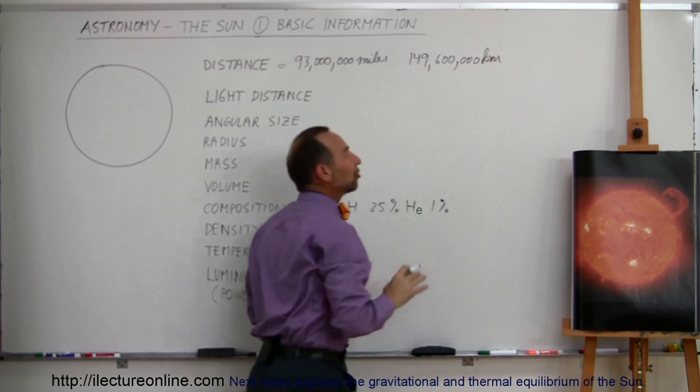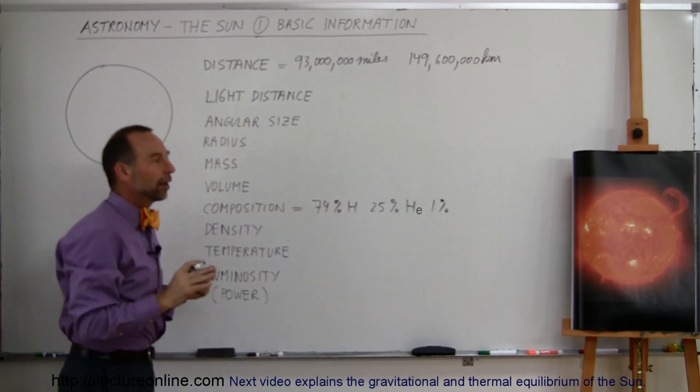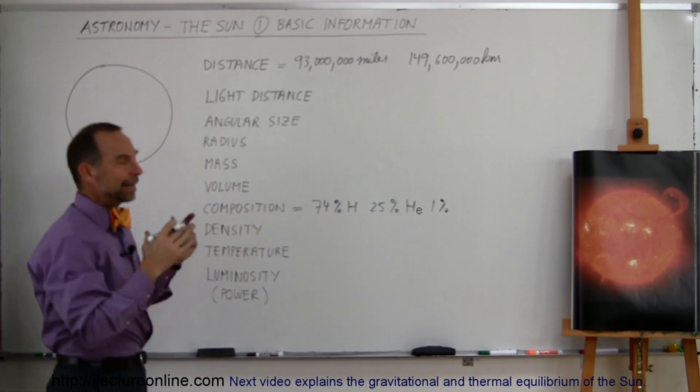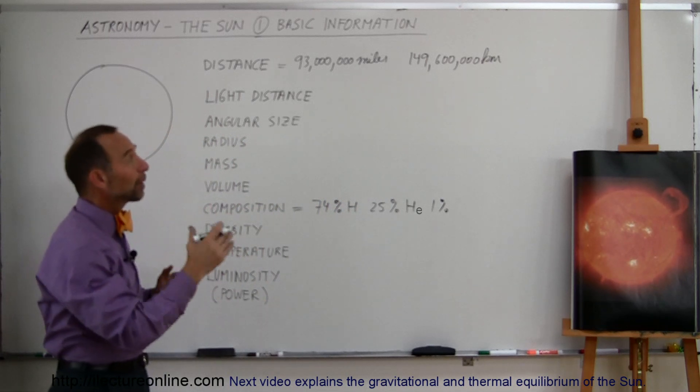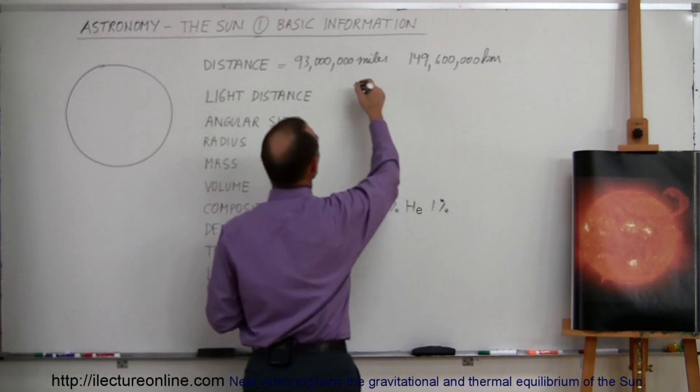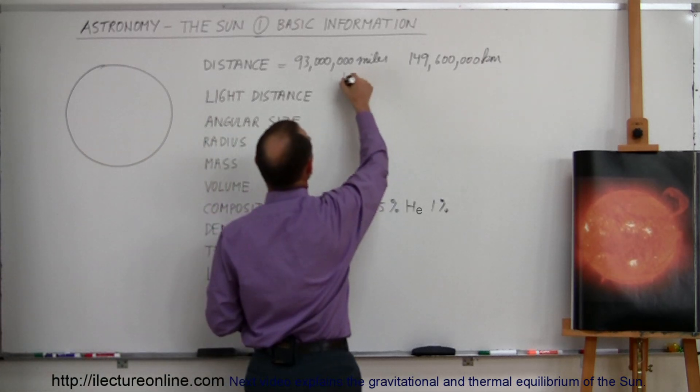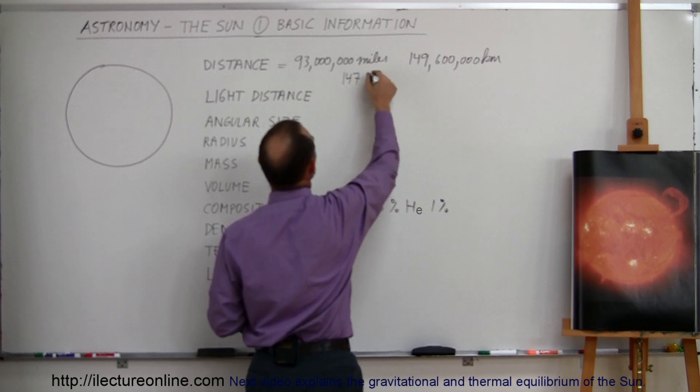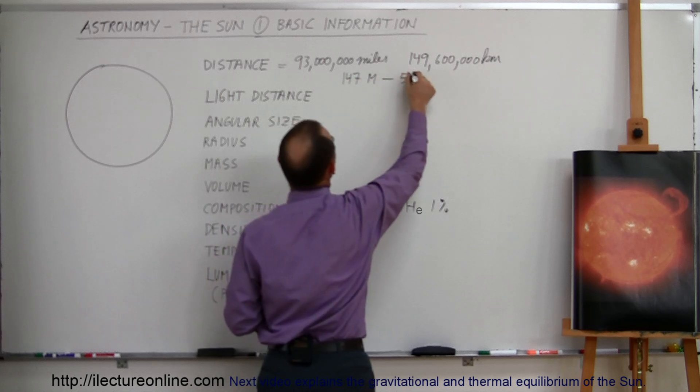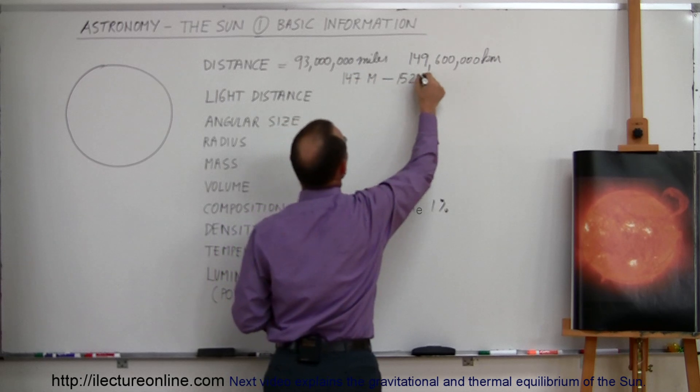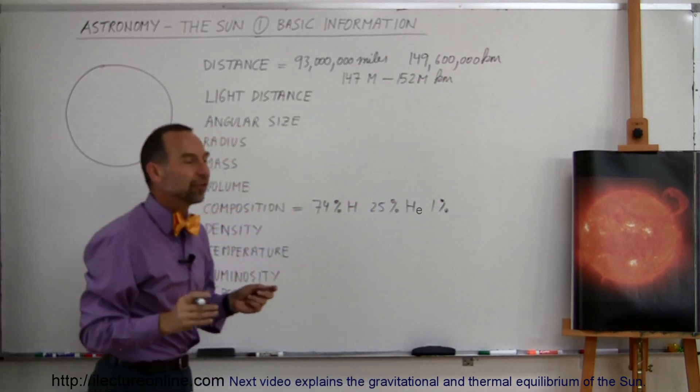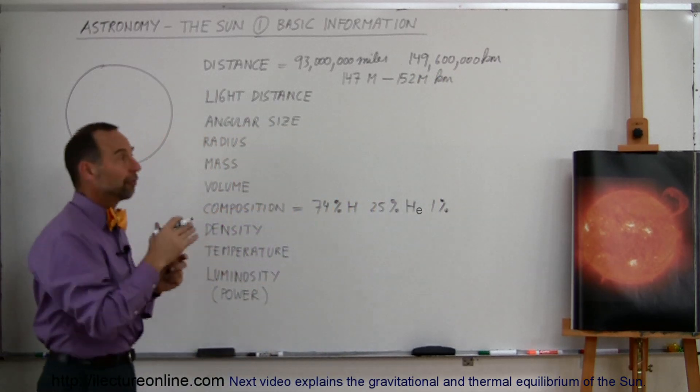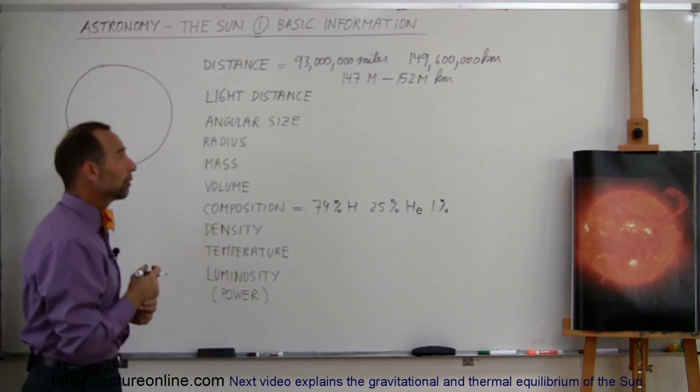Now, that's the average distance because the Earth goes around the Sun in an elliptical orbit, so sometimes the Earth is quite a bit closer, and sometimes the Earth is quite a bit farther away. So typically, the distance between the Earth and the Sun varies from about 147 million to about 152 million kilometers. So there's about a 3% difference in the distance to the Sun from one point of its orbit to the other point of its orbit.